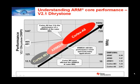Dhrystone loops per second is one representation. Another common representation is DMIPS — Dhrystone MIPS — obtained when the Dhrystone score is divided by 1,757, which is the number of Dhrystones per second obtained on the VAX 11/780, nominally a one MIPS machine.